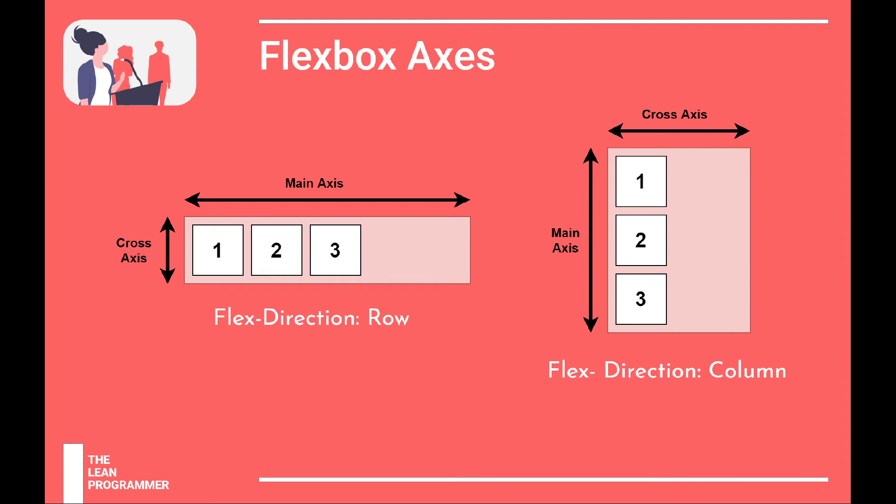Flexbox axes is basically, there are two axes in flexbox. First one is main axis and second one is the cross axis. So forget about this horizontal or vertical concept in flexbox.